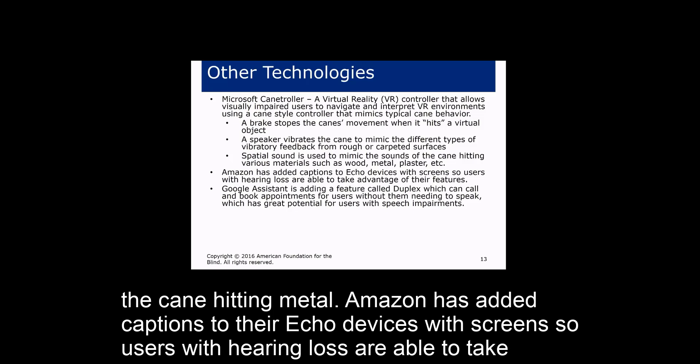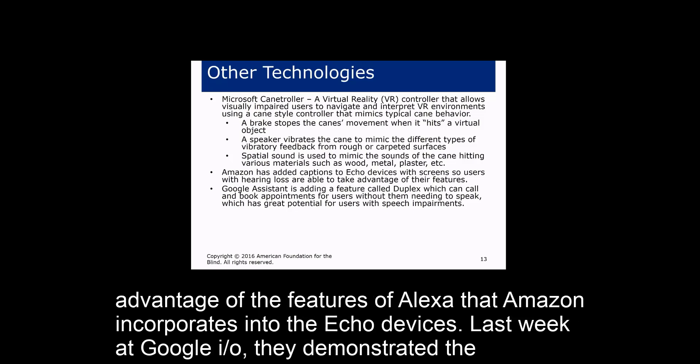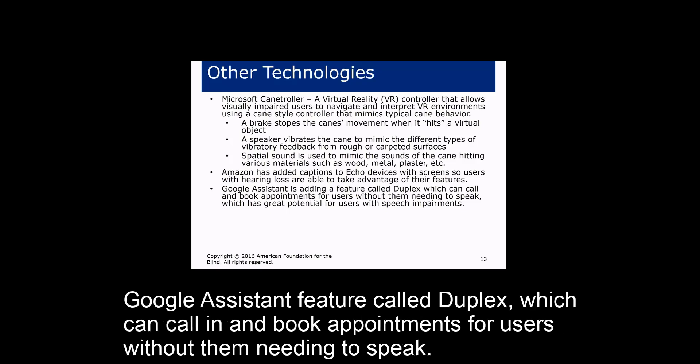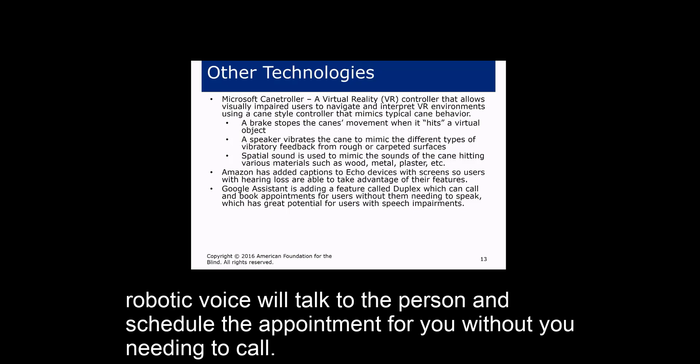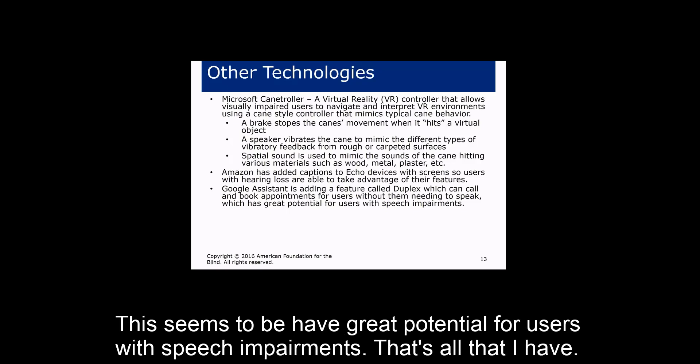Amazon has added captions to their Echo devices with screens, so users with hearing loss can take advantage of Alexa features. And at Google I/O last week, they demonstrated Google Assistant's Duplex feature, which can call and book appointments for users without them needing to speak. You say 'Hey Google, book me an appointment at the salon,' and the robotic voice calls and schedules it for you — which seems to have great potential for users with speech impairments.